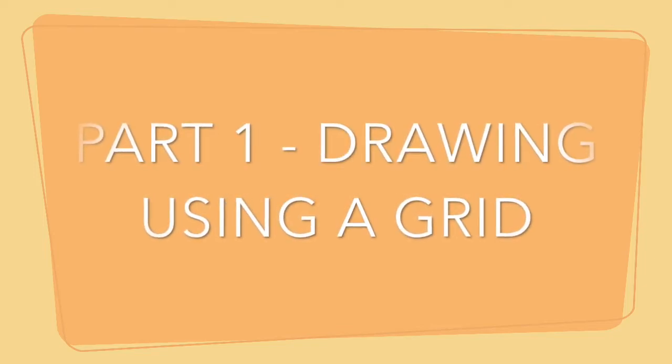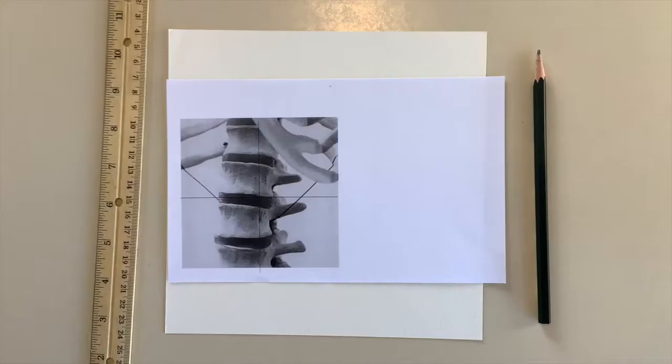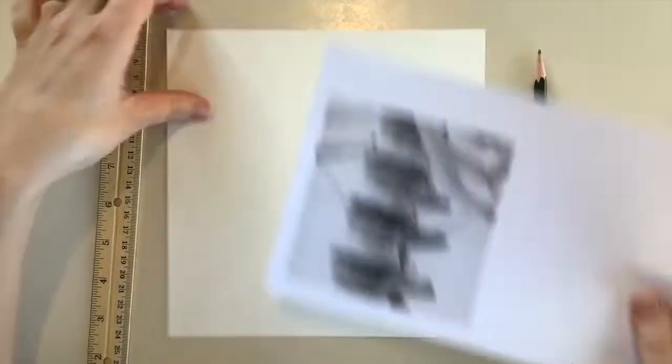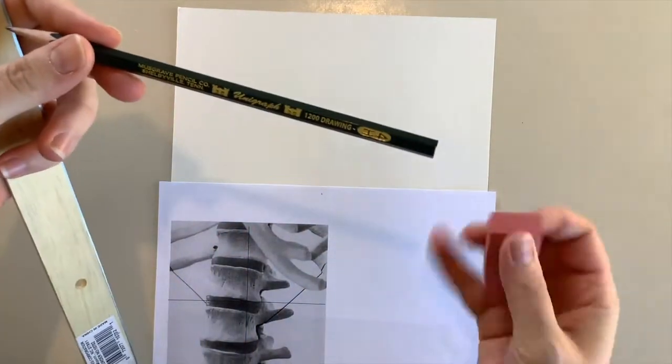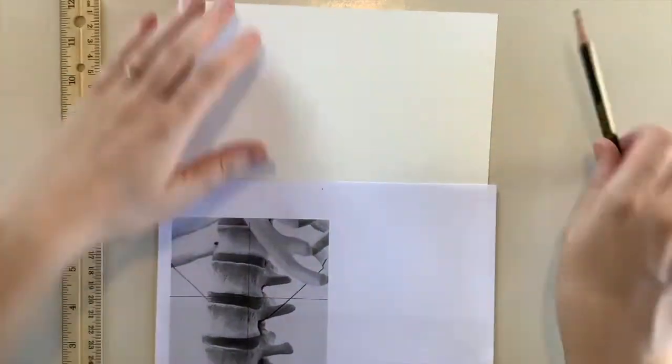Hello class! Today we're going to be learning about part one, which is how to draw using a grid. You'll need your skeleton reference photo, your watercolor paper, a ruler, your 4-H pencil, and an eraser in order to complete this process.